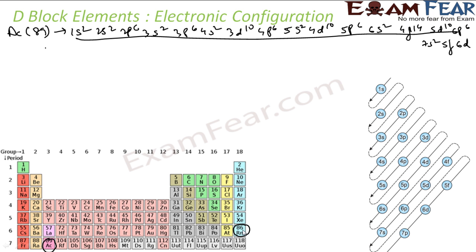Right, so 88 and then we have 3 more. Right, 2 will go here: 86, 87, 88. And then the next electron will go to 6d orbital. So this will be Rn 7s2 5f0 6d1.